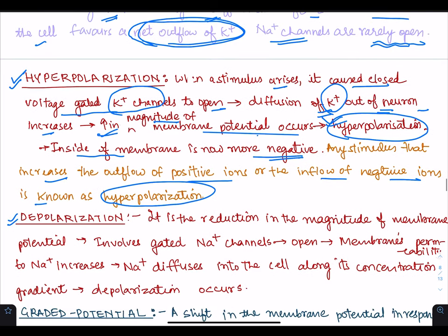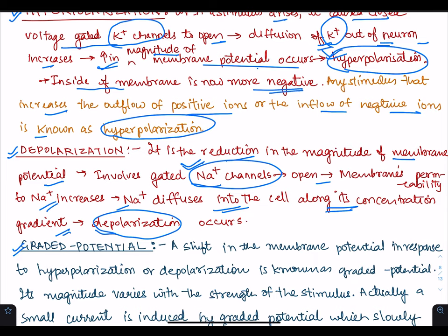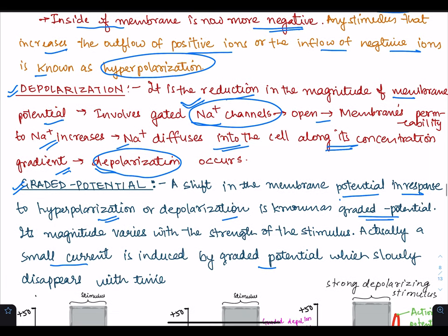What is depolarization? It is the reduction in the magnitude of membrane potential. It involves gated sodium channels — they open and the membrane's permeability to sodium increases. Sodium diffuses into the cell along its concentration gradient and this causes depolarization. What is graded potential? A shift in the membrane potential in response to hyperpolarization or depolarization is known as graded potential. Its magnitude varies with the strength of the stimulus, and a small current induced by graded potential slowly disappears with time.